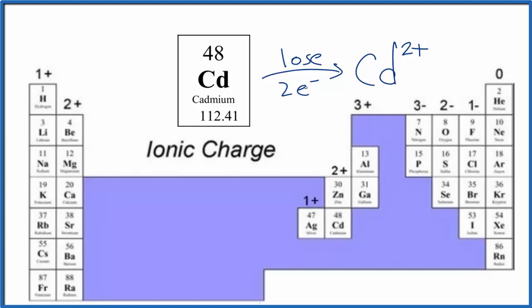You might ask, where does it lose these electrons to? Well, in general, it'll lose them to another element. So imagine you have cadmium here, loses two electrons.